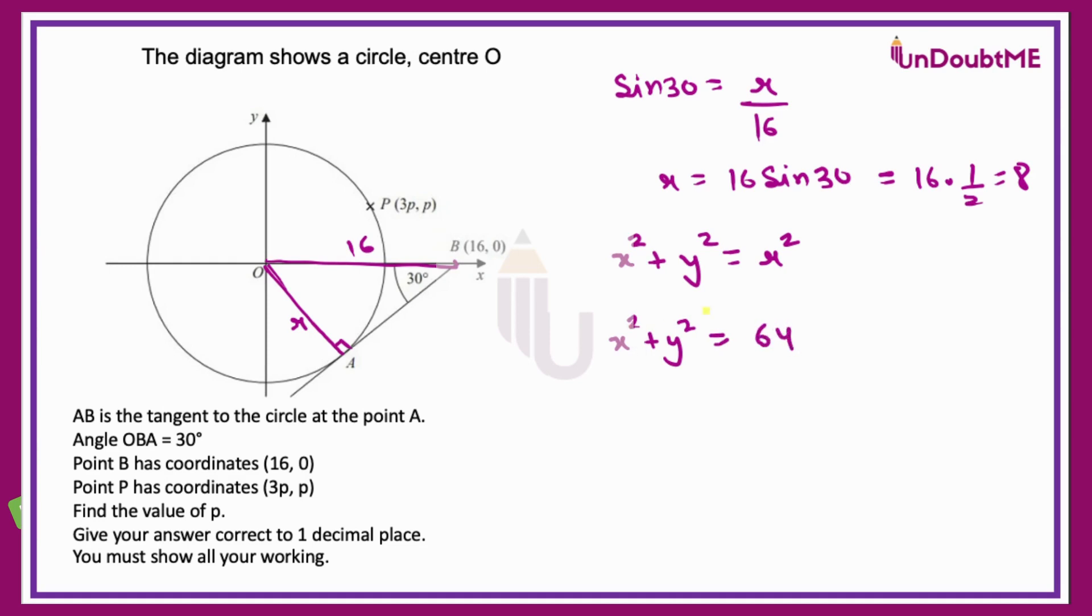Now till here we have just got equation of a circle. If you see this point P whose coordinates are given, it lies on the circle, meaning this will satisfy the equation of the circle. If I substitute both the points here, then 3P whole square plus P square is equal to 64. That will give me 9P square plus P square is equal to 64. 10P square is equal to 64, and P square is equal to 64 over 10, that is 6.4.